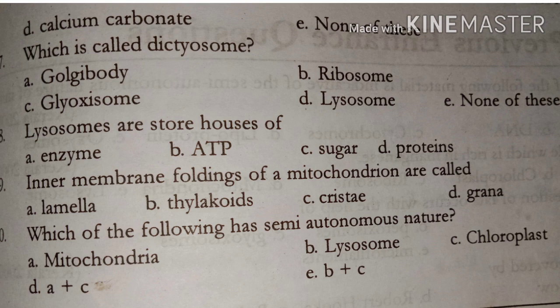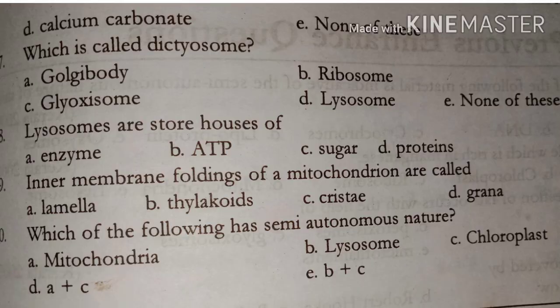Which of the following has semi-autonomous nature? Answer Option D: A plus C — Mitochondria and Chloroplast.